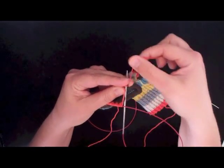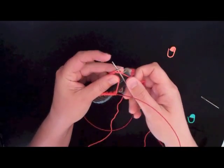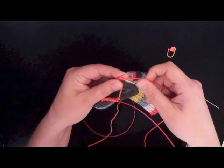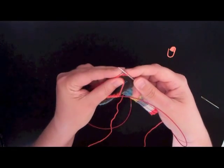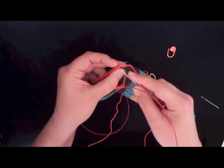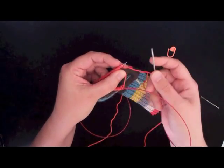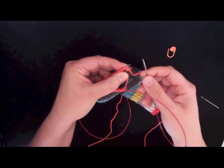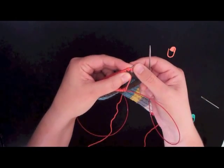Go into that first stitch on the needle, the one we just cast on in fact, wrap, pull through, and transfer that loop to the left-hand needle. So now I have two extra stitches sitting there on the needle, and these will be the two that I knit when I come back.